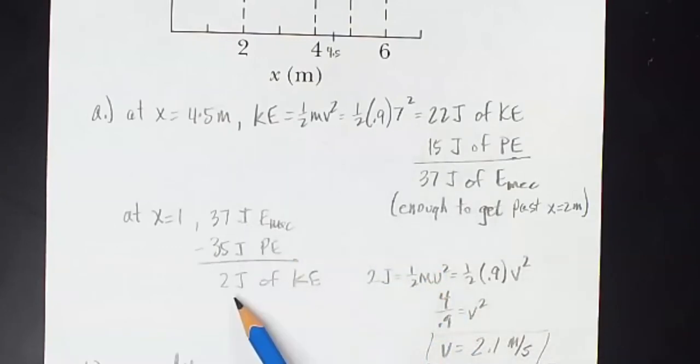So 35 of it is PE, 2 of it is KE. So 2 then is equal to one-half MV squared, solving that for V. I see the particle is moving at 2.1 meters per second.